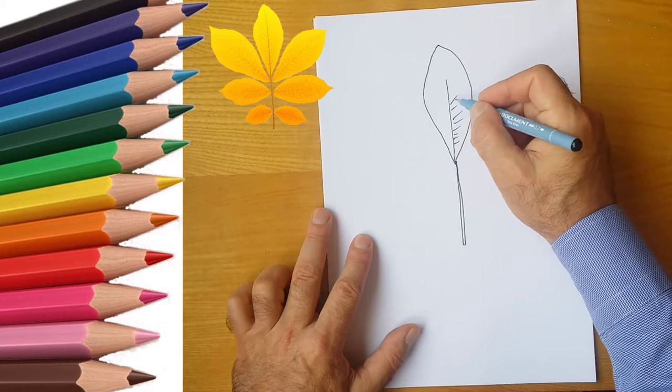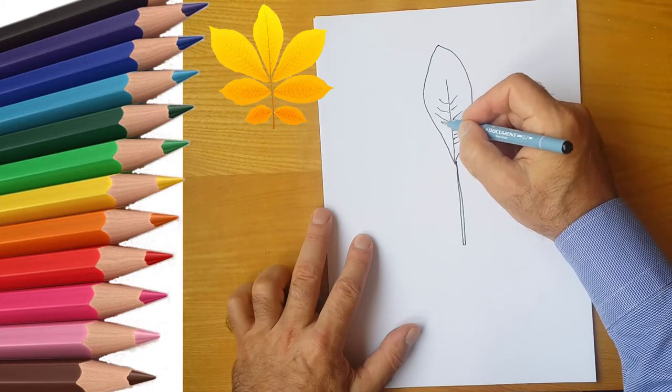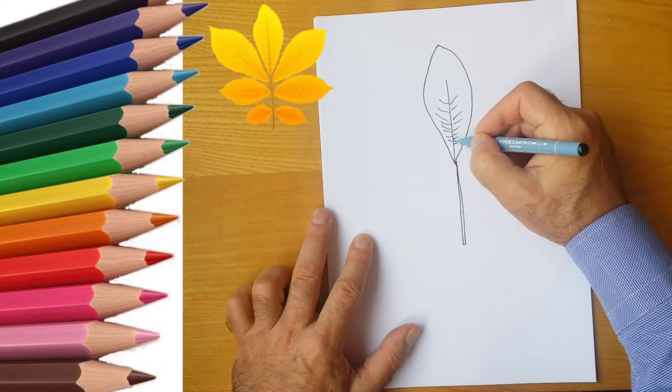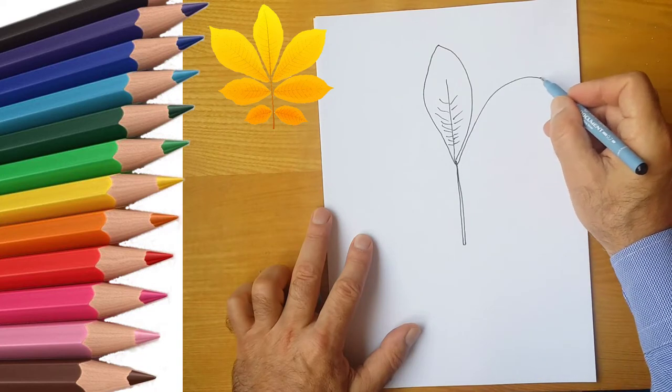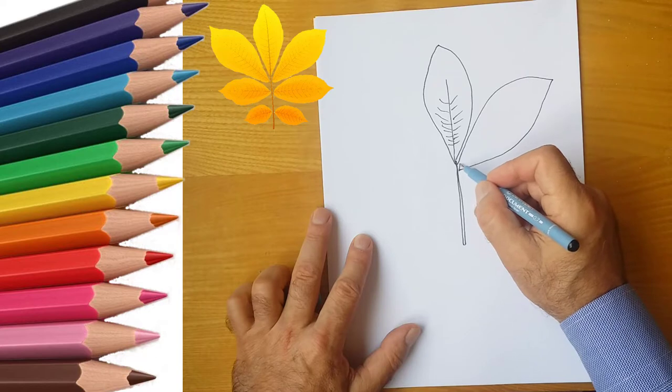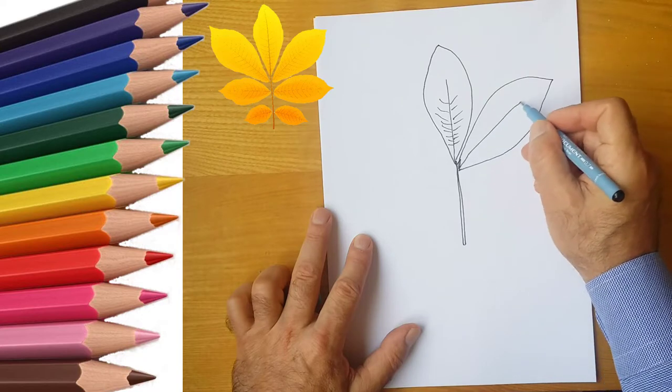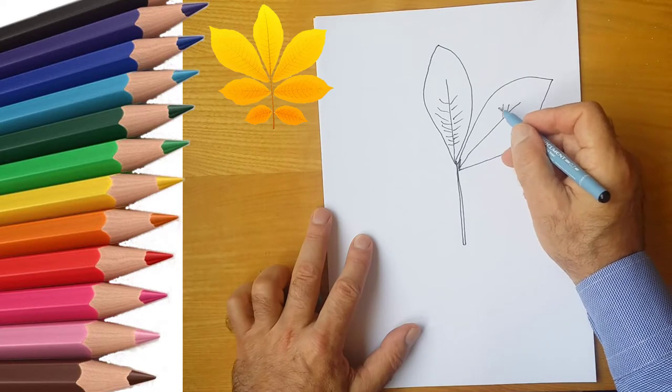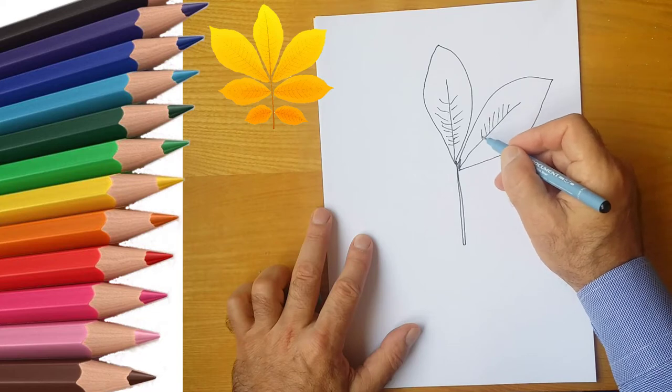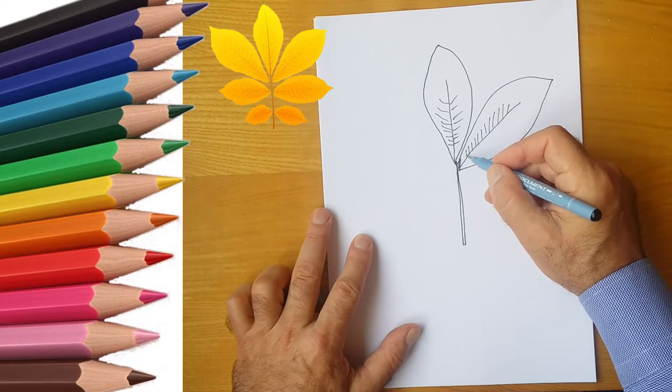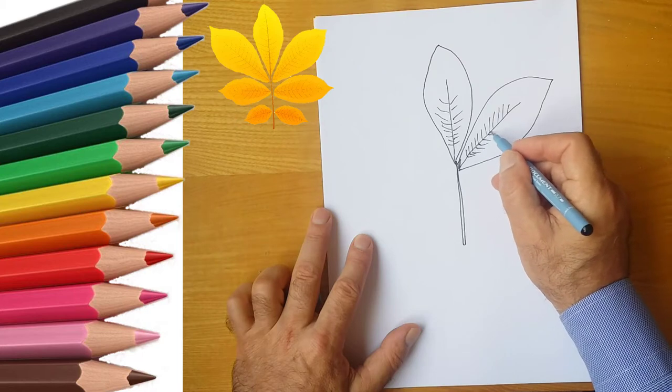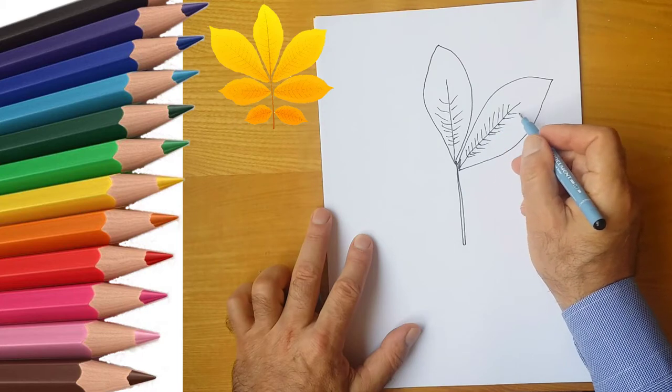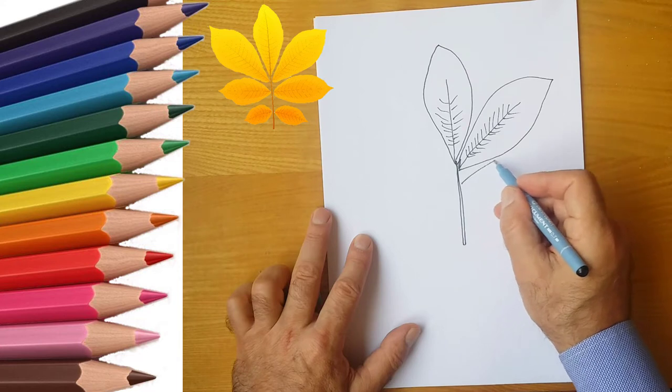First, draw on a piece of paper with a pencil. Draw the contour of the leaf.